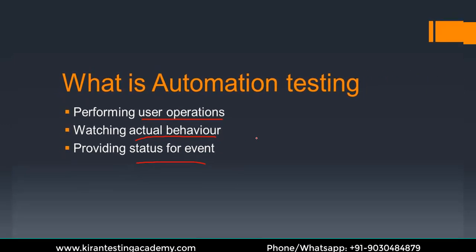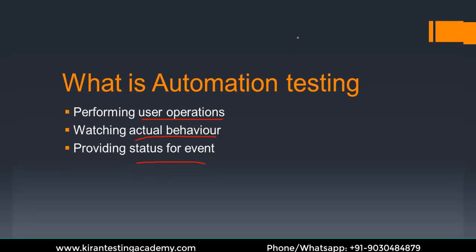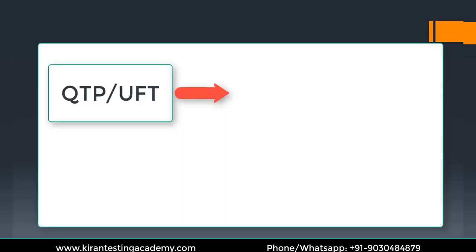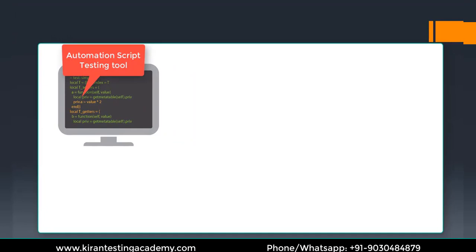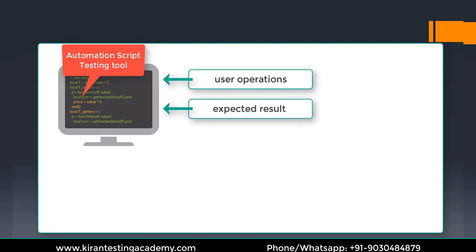These three activities happen in manual testing. In automation testing, you no longer need to do them manually. Depending on your tool — for QTP you write scripts in VBScript, for Selenium it supports multiple languages — assume we write in Java. We write a script that gives the tool all the information: the username, the password, where to click, what to do after clicking, and what we are expecting.